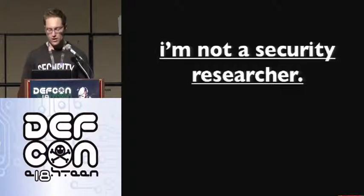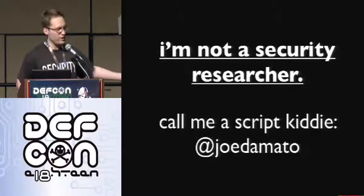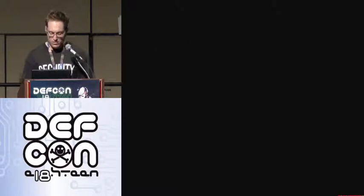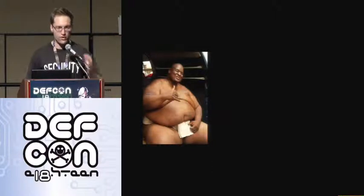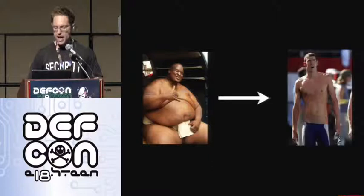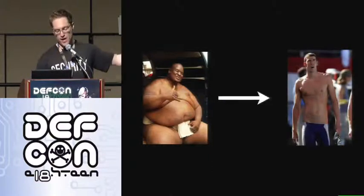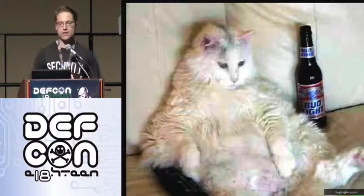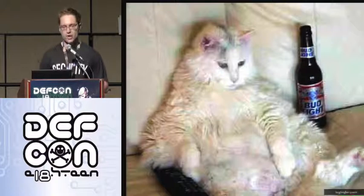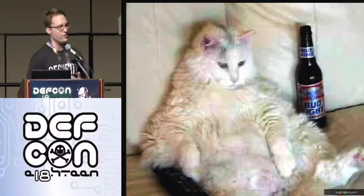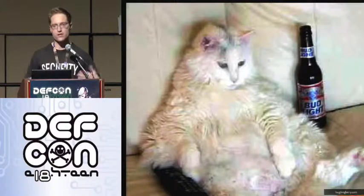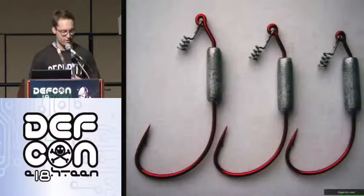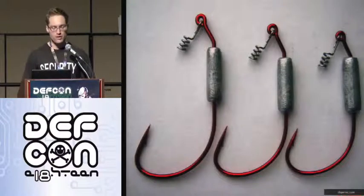I'm not a security researcher. I just have a T-shirt that says security, so you can feel free to get on Twitter and call me a script kiddie. I'm just Joe D'Amato. Here's the problem: I was running around doing Ruby consulting for a lot of shops and I noticed the common problem was that their Ruby binaries after running in memory for a long time are very large and slow. People want Ruby binaries to be small, thin, and fast, but most people are really lazy. They don't want to install custom patches or rebuild a Ruby binary — they just want to install some library to figure out where the Ruby binary is leaking memory.